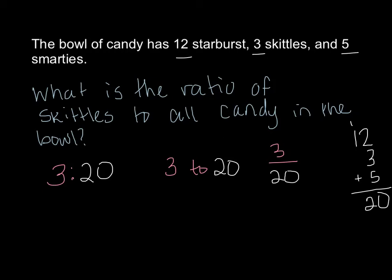Check to see if it's something that can be reduced. Three does not go into 20 evenly. So nothing goes into both of those evenly. So your answer is a three to 20 ratio of Skittles to all candy. Kind of easy, huh? That's as difficult as it really gets. Pretty easy concept. Let's go ahead and try a you do.